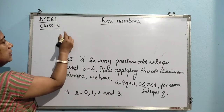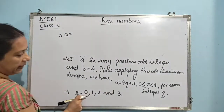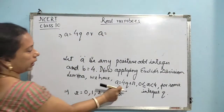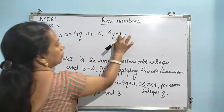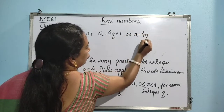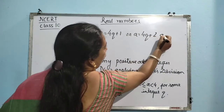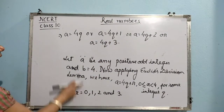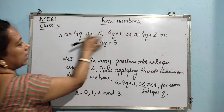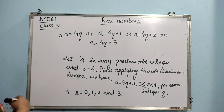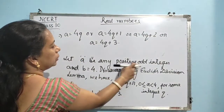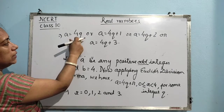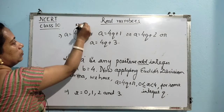Now, it implies that A will be having values: when R is 0, A is equal to 4Q; when R is 1, A is equal to 4Q plus 1; when R is 2, A is equal to 4Q plus 2; when R is 3, A is equal to 4Q plus 3. We are arriving at the conclusion that we can have four values of A. But remember that A is being taken to be an odd positive integer.